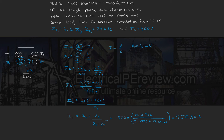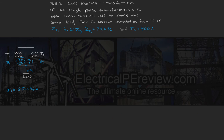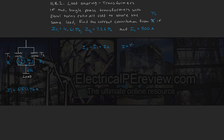Now let's solve for I2, the current contribution from transformer 2. We begin just like last time: IL equals I1 plus I2. From Ohm's law, current equals voltage over impedance, and since both transformers have the same turns ratio, V1 equals V2, which we set equal to V.